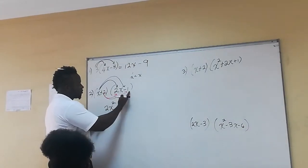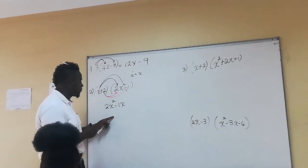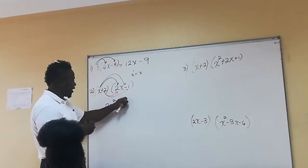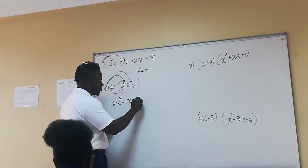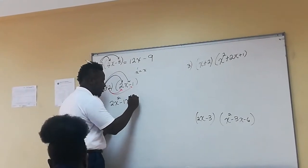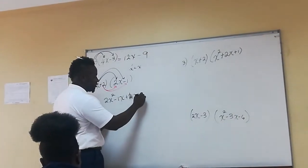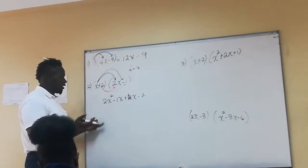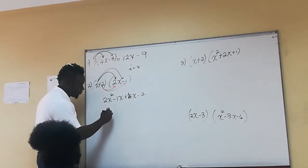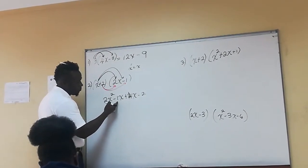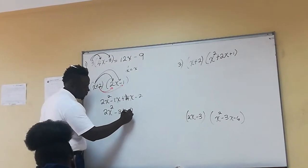Then x times minus one gives me minus one x. Next, two times two x gives us four x, and two times minus one gives me minus two. Looking at the like terms together, my answer here would be two x squared minus three x minus two.